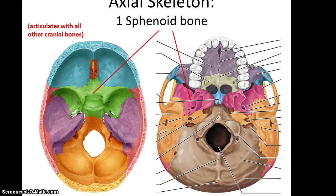The sphenoid bone — there is one sphenoid bone. It is unique in that it articulates with all of the other cranial bones.